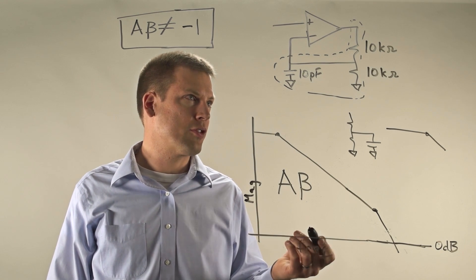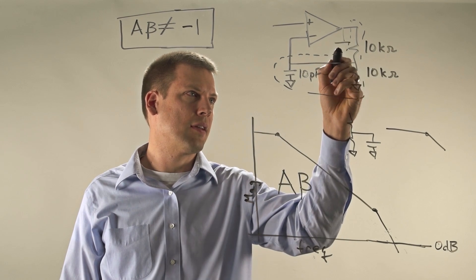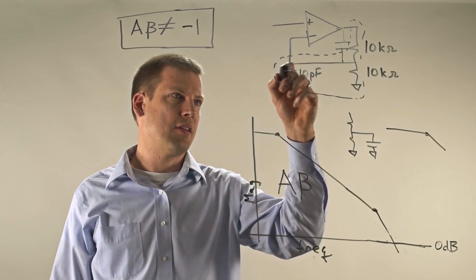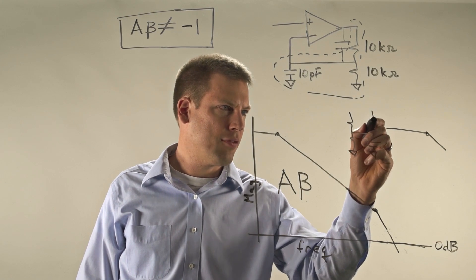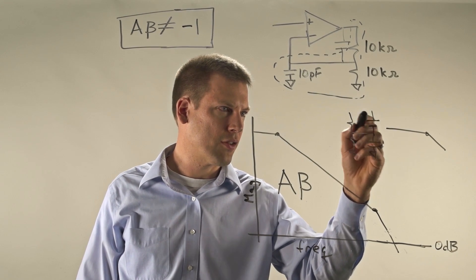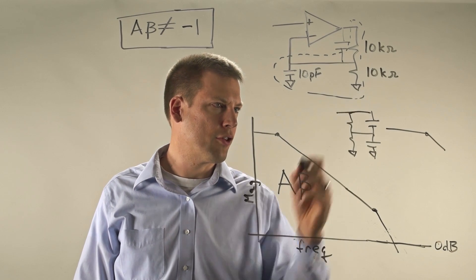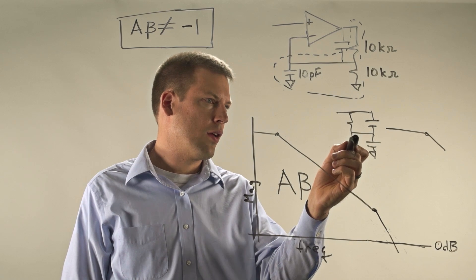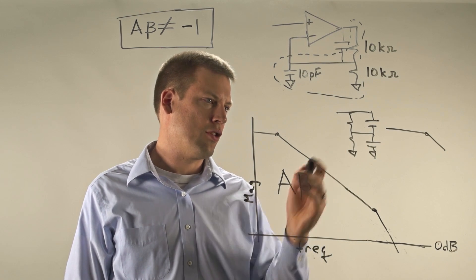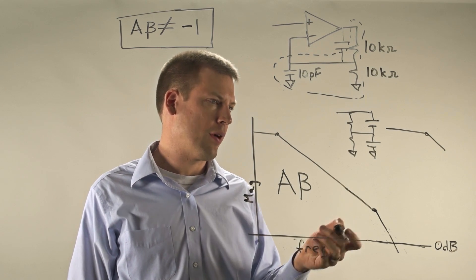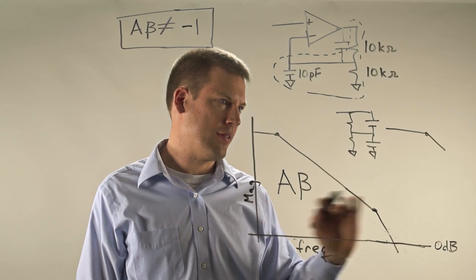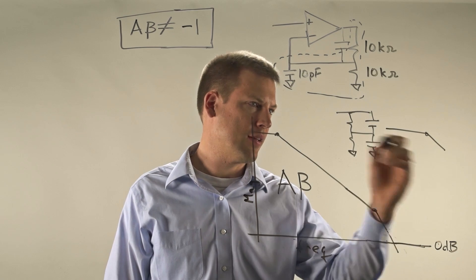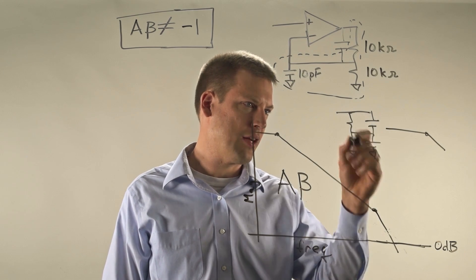Another thing that folks often do is they'll put a capacitance across the resistor that's in the feedback. And what that does is you end up forming a circuit that looks like this for your beta term. And if you think about this, you have your resistor divider that sets your gain at your low frequencies. You have a capacitive divider that sets your gain at your high frequencies. And then there's some sort of transition region in between that depends on the ratios you've got here.